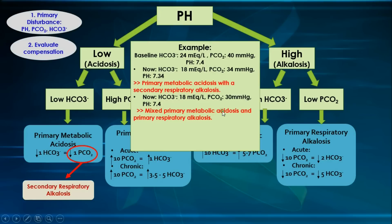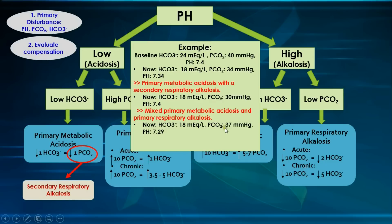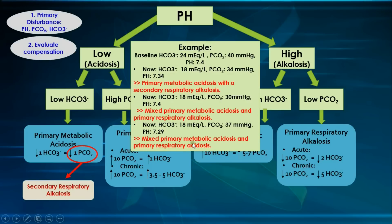In a third example, if bicarbonate is 18, pCO2 is 37, and pH is 7.29, the diagnosis is a mixed primary metabolic acidosis and primary respiratory acidosis. The drop in pCO2 doesn't match the drop in bicarbonate — you should see one unit decrease in pCO2 per one unit decrease in bicarbonate. Since the decrease in pCO2 is too small, the lungs are unable to hyperventilate appropriately, as seen in patients with COPD.